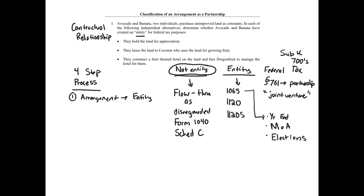So step one: we determine whether this contractual relationship — this arrangement — rises to the level of a federal tax entity. If you're a general partnership, limited partnership, limited liability partnership, or LLC for state law purposes, the default rule is you're treated as a partnership for federal tax purposes. If you're a corporation for state law purposes, you're treated as a corporation. That's the key default rule to keep in mind.